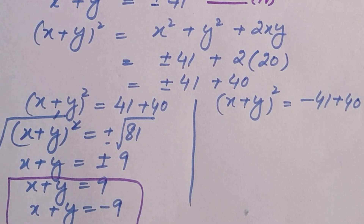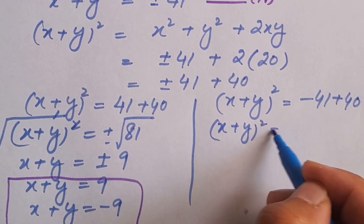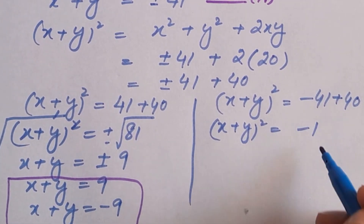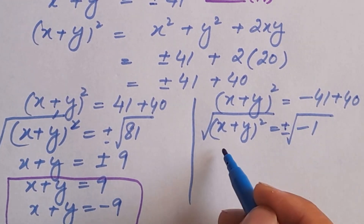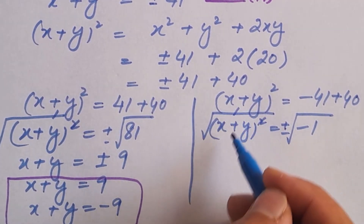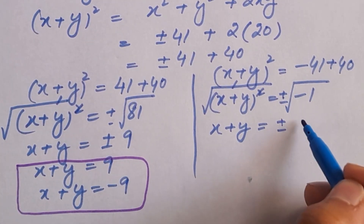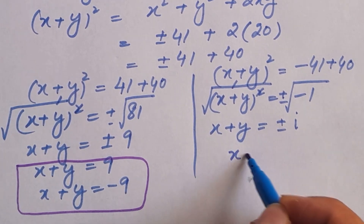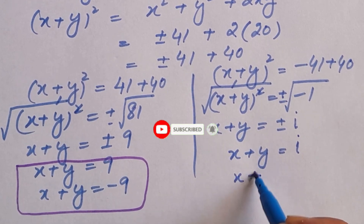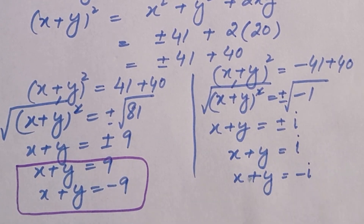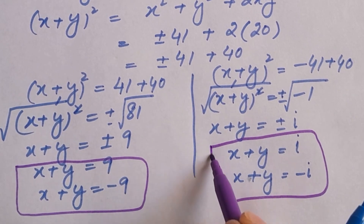Now we are going to solve the second case. Case 2: negative 41 plus 40 gives us negative 1. Taking the square root on both sides, x plus y is equal to plus or minus the square root of negative 1, which is iota. So x plus y equals positive iota or negative iota. This means we got four solutions in total: two are real solutions and two are complex solutions.